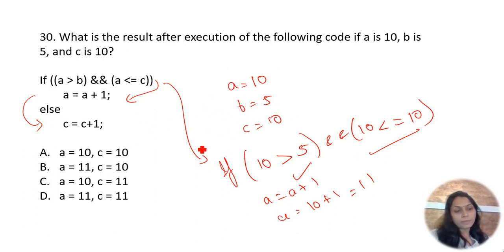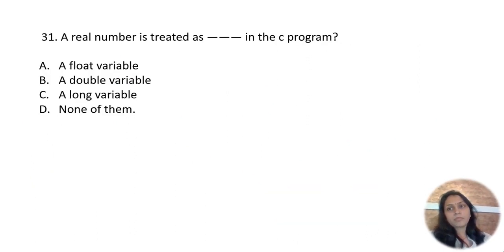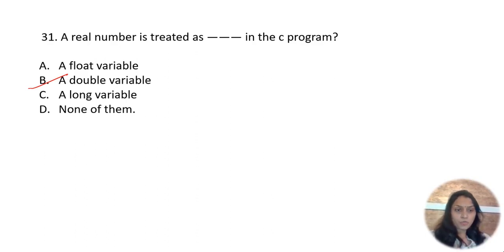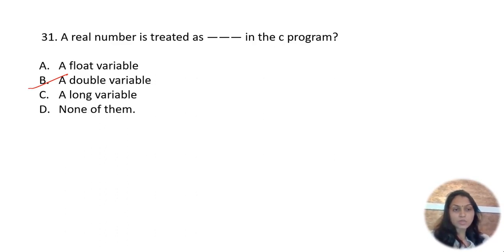A real number is treated as what in C? Real numbers are always treated as a double variable by default. Double has longer precision than float. So whenever a real number is mentioned, it defaults to double. Option B is correct — a real number is treated as a double variable in C.